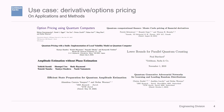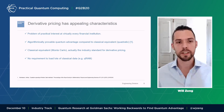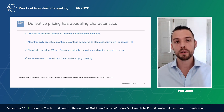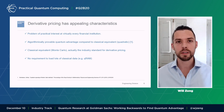Let me dive into one specific use case: derivatives and options pricing. There's been some recent work and papers on this in the last year and a half or so, some from my colleagues Paul Berchard and Nikita Semitopoulos on the Goldman team. Derivative pricing is interesting because it's of practical interest at virtually every financial institution at large scale. We know algorithmically there is a quadratic speed-up for relatively generic Monte Carlo simulations, which is what is used classically in practice. And the requirements don't require loading lots of classical data or an extremely large Q-RAM.